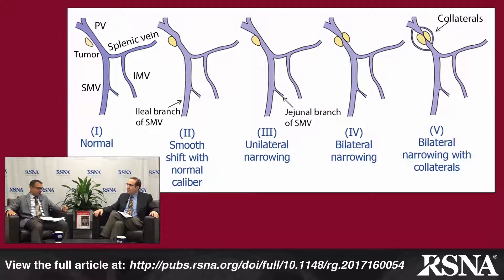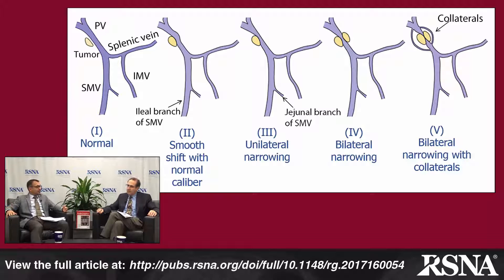If you have complete tumor encasement, there is a 100% probability the vessels are invaded. The second way, described by Ishikawa and colleagues, characterizes the relationship between the pancreatic tumor and nearby vessels based on vein caliber and length of interface as predictors of surgical outcomes. For example, a normal caliber vein, a smooth shift, or unilateral narrowing with less than 1.2 cm of craniocaudal extension is associated with more favorable surgical outcomes, versus bilateral narrowing or collateral vein formation. This emphasizes the need for multiplanar reformations to assess craniocaudal tumor extent.